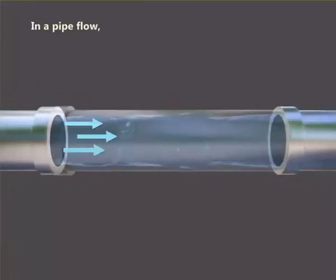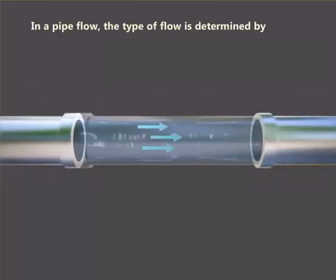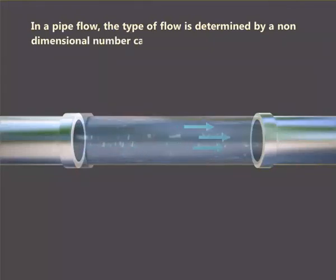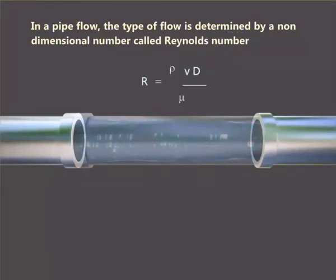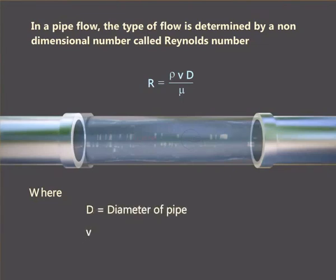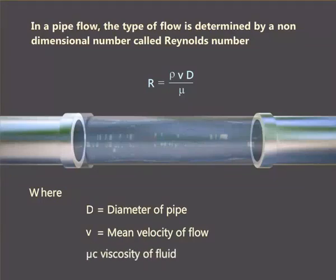In a pipe flow, the type of flow is determined by a non-dimensional number called Reynolds number: R equals rho times V times d divided by mu, where d is the diameter of the pipe, V is the mean velocity of flow, and mu is the kinematic viscosity of the fluid.